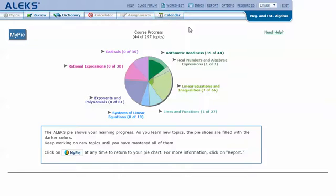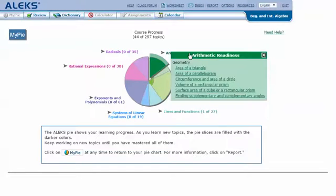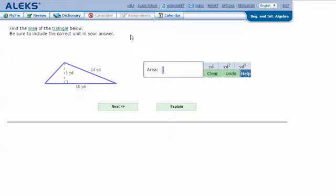In your ALEKS pie, mouse over the green slice arithmetic readiness to reveal the drop-down list of topics you need to cover. Click on area of a triangle. Here's an example problem: find the area of the triangle below. Be sure to include the correct unit in your answer.